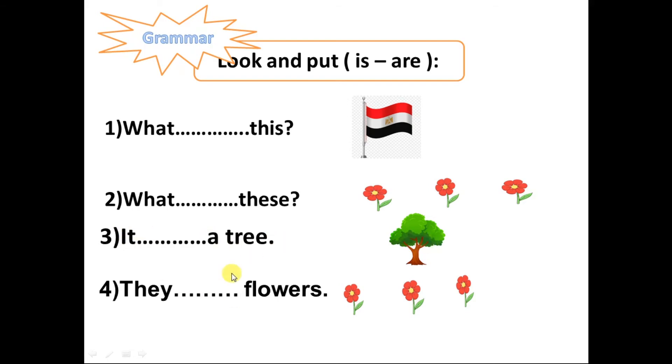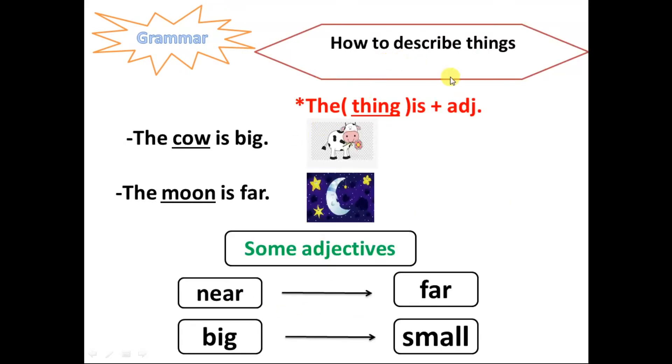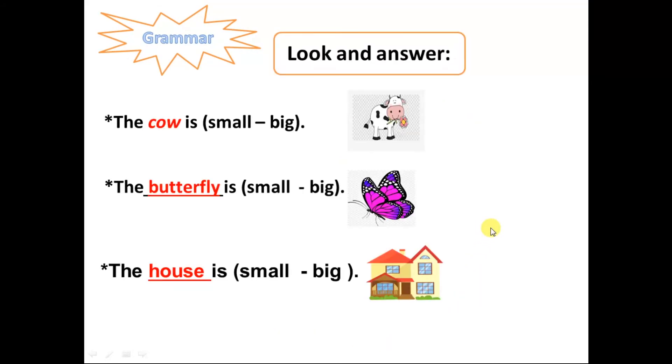How to describe things. We use verb to be for description. The cow is big. The moon is far. These are adjectives. So we use verb to be. Some adjectives like near, the opposite is far. Big, the opposite is small. Very good, you got it. Look and then, so the cow is small or big? Yeah, it's big. The butterfly is small. The house is big. Very good.